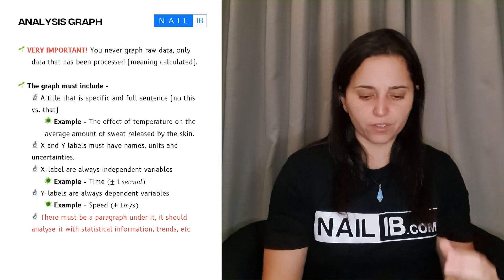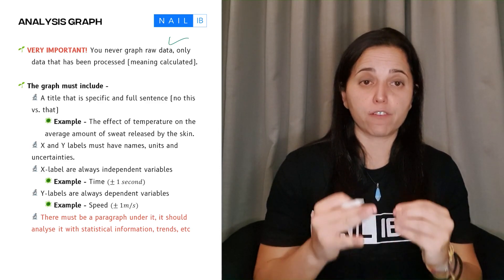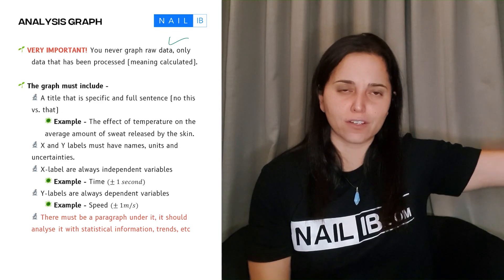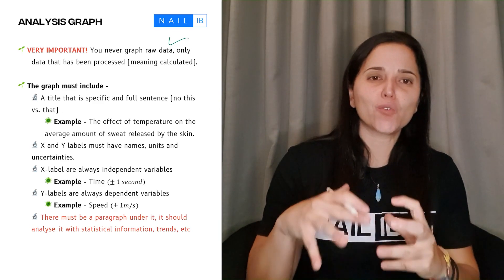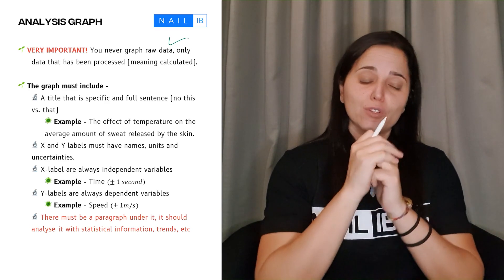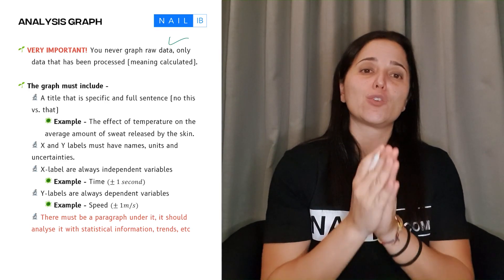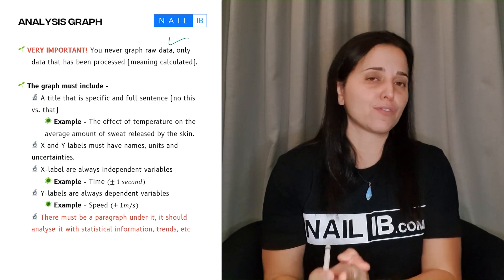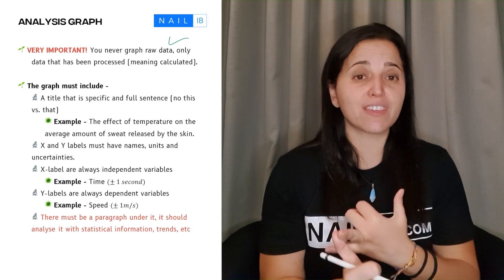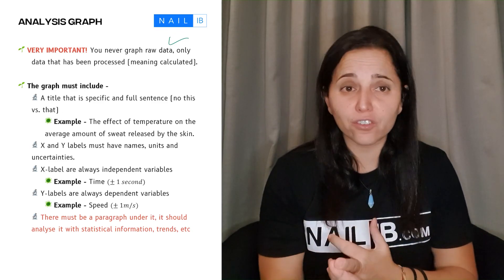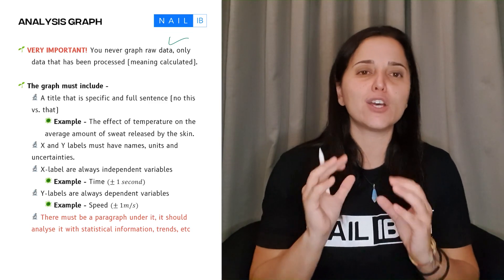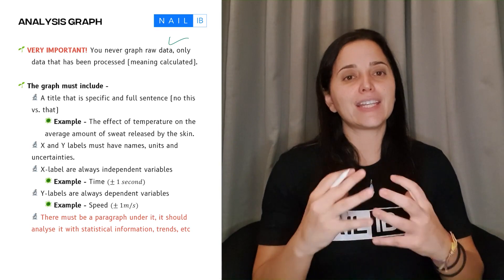The first and most important thing is never, ever graph your raw data. Your raw data stays on the raw data section. What exactly are you graphing? You're graphing your processed data. I have seen a lot of students lose points because they're using the raw data into the graphs. What are the things that you'll be graphing? You'll be the average, the standard deviation with the standard errors. These are the stuff that you're going to be graphing. The average is the most important part. Do not do it because you will lose a lot of points.